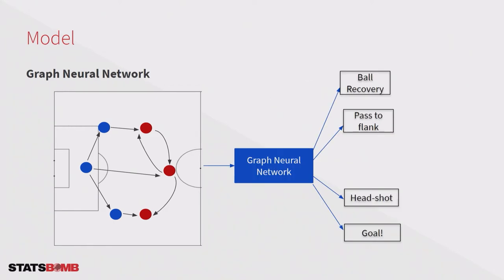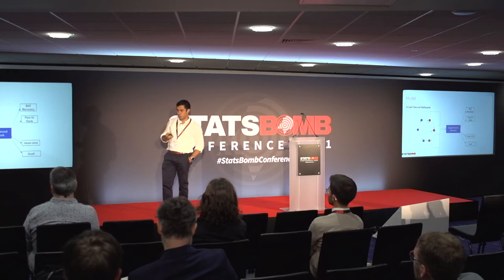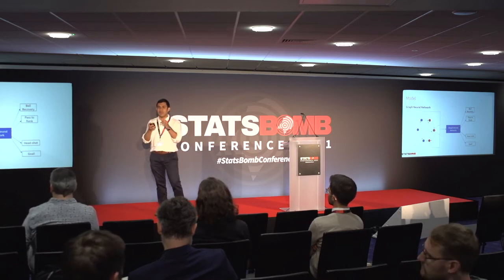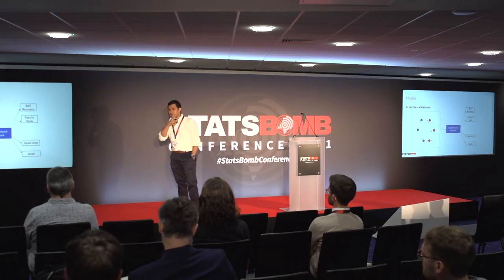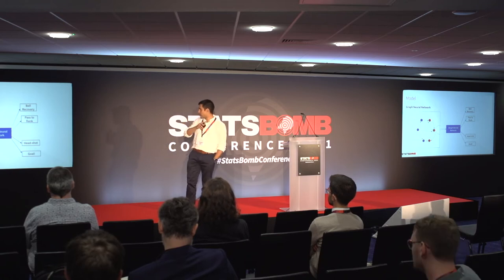Here we have a beautiful challenge. The StatsBomb 360 data is obtained from the broadcast, so we don't have the same number of players in every action or every frame — we can have different numbers of players and different numbers of edges. The challenge is how to represent this unstructured data. Graph neural networks are a really good fit here because they are able to handle different numbers of players and different numbers of edges.